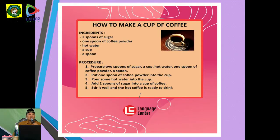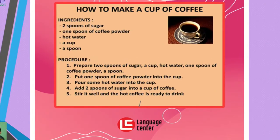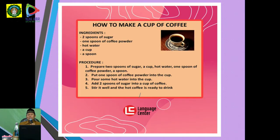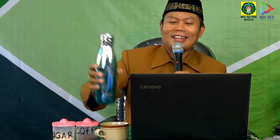Yang pertama, ingredients atau materials. Di dalam procedure text kita butuh: yang pertama itu ada goal — tujuannya apa. How to make a cup of coffee. Setelah tujuannya kita tahu, kita siapkan materialnya — bahan-bahannya. Ingredients: two spoons of sugar — dua sendok gula. Selain gula, kopi, dan hot water — air panas. A cup — secangkir. Dan a spoon — sendok. Ada tablespoon (sendok makan) dan teaspoon (sendok teh yang kecil).